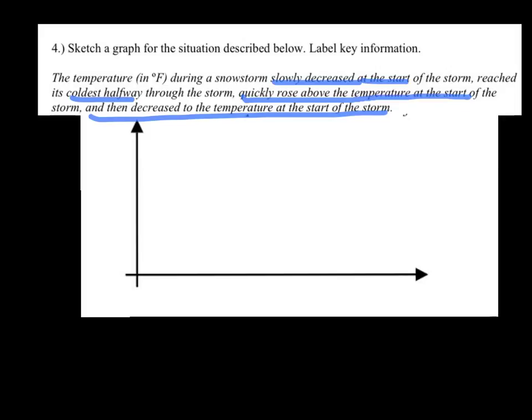So I'm going to go ahead and label my axes. So time is almost always going to be your x variable because that's your independent. And then your dependent is the temperature in Fahrenheit.